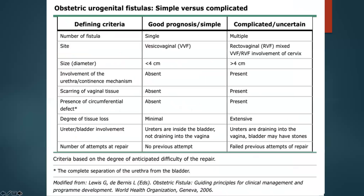How do we classify fistulas? They can be simple fistula versus complicated fistula. A single vesicovaginal fistula less than 4 cm where the adjacent vaginal tissue is healthy, there is no scarring, no involvement of urethra or ureter, and no previous attempt of surgery — these are simple, good-prognosis fistulas. Rest all are complicated fistulas: multiple fistulas, involvement of urethra or ureter, large fistula more than 4–5 cm, associated stress urinary incontinence, or multiple previous repair attempts. These are also known as fistulas with uncertain prognosis.